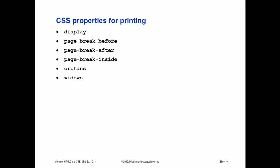Some key CSS properties for printing: the display property uses keywords like block, inline, and none — none removes an element from the printed output entirely. The page-break-before property determines if a page break is allowed before an element's box; common keywords are always, auto, and avoid. The page-break-after property does the same thing but determines if a page break is allowed after an element's box, using the same keywords: always, auto, and avoid.